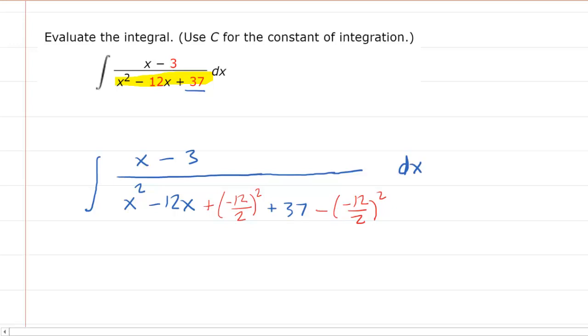Now negative 12 divided by two is six, and then six squared is 36. So in fact, what we've done in the denominator is we have added and subtracted 36. Over here, we're going to have 37 minus 36, which of course is just one. So we'll just put a plus one over here.